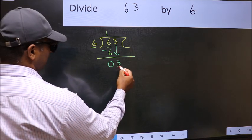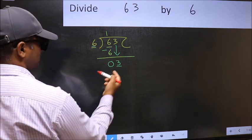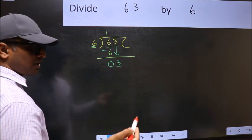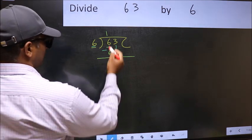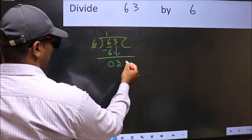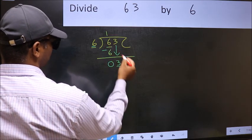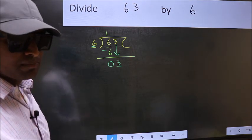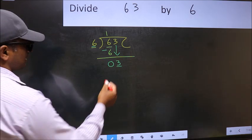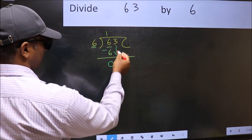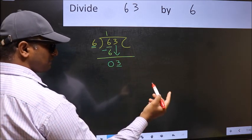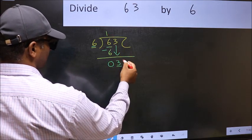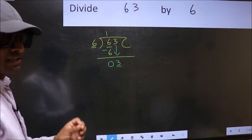And the mistake is this. Here we have 3 and here 6. 3 is smaller than 6. So what many do is, they directly put dot and take 0. Which is wrong. Why is it wrong? Because just now you brought this number down, and in the same step, you want to put dot and take 0.